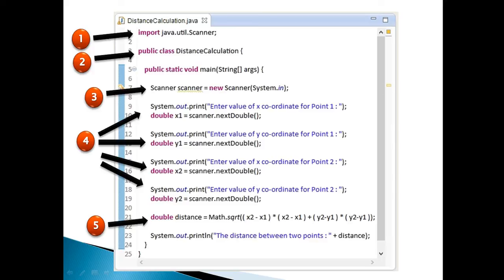Moving ahead. Step 4: Prompt the user to enter value of x coordinate for Point 1. Create a double variable x1. Using Scanner class nextDouble() method, take user inputs for the value x1 and assign it to x1 variable. Moving ahead, prompt the user to enter value of y coordinate for Point 1. Create a double variable y1. Using Scanner class nextDouble() method, take user inputs for the value y1 and assign it to y1 variable.